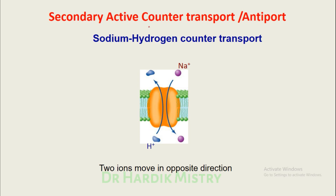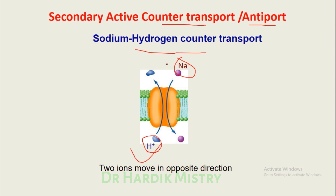Secondary active counter transport, also known as antiport: in sodium-hydrogen counter transport, the hydrogen ion and sodium ion move in opposite directions. Two ions move in opposite directions, so this is known as counter transport or antiport.